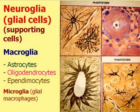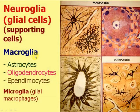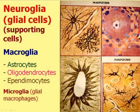Neuroglia, or glial cells, are the supporting cells. They provide favorable conditions for neurons. They can be divided into two groups: macroglia, consisting of large glial cells — astrocytes, oligodendrocytes, and ependymocytes — and microglia, or glial macrophages, which are small cells.